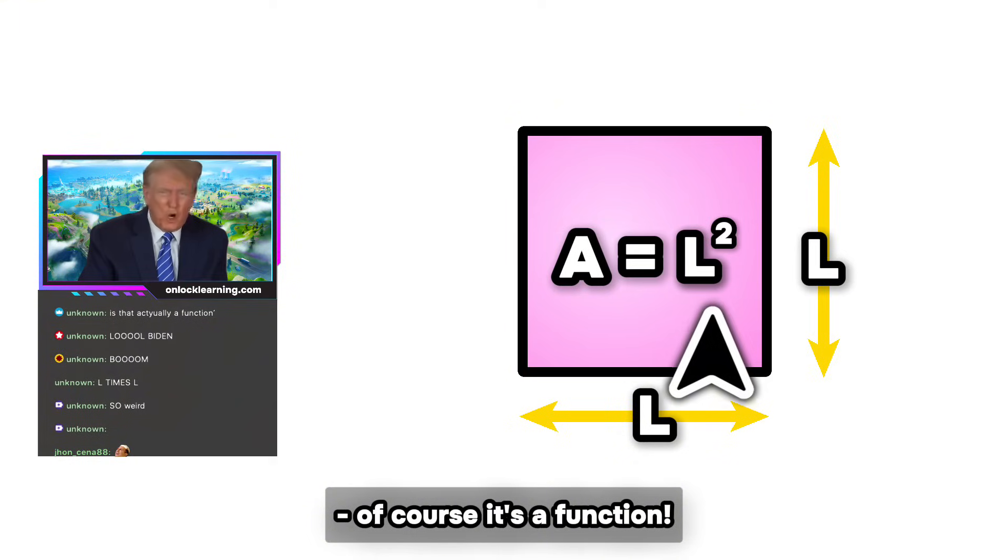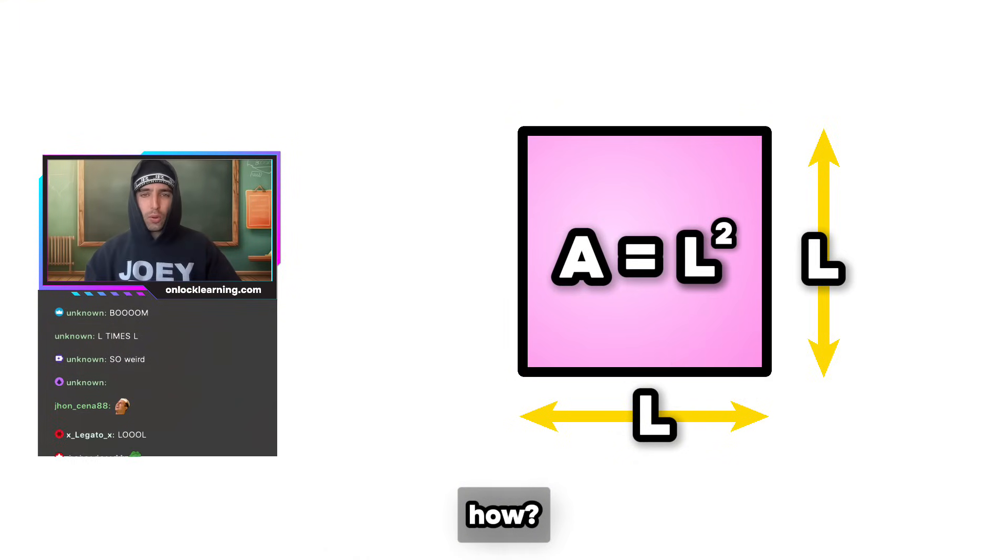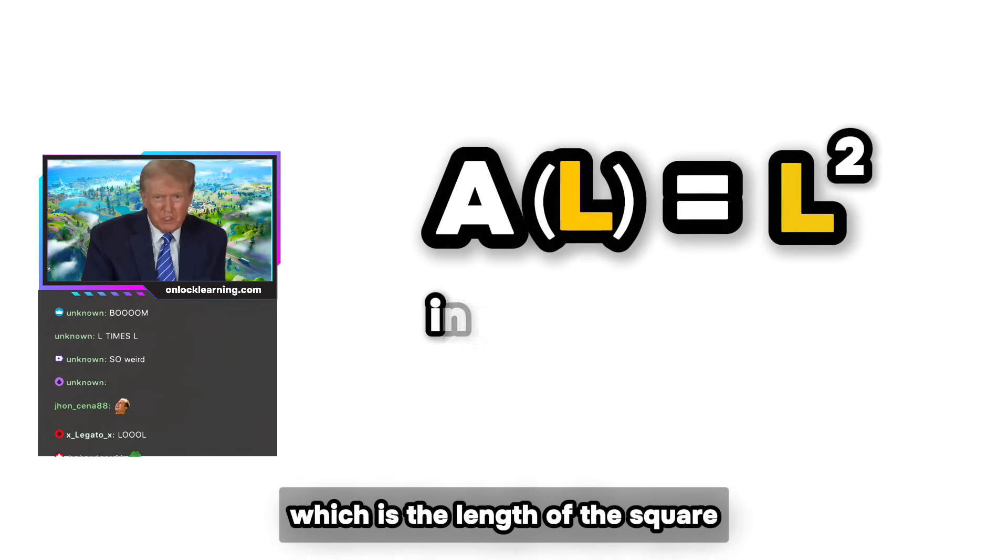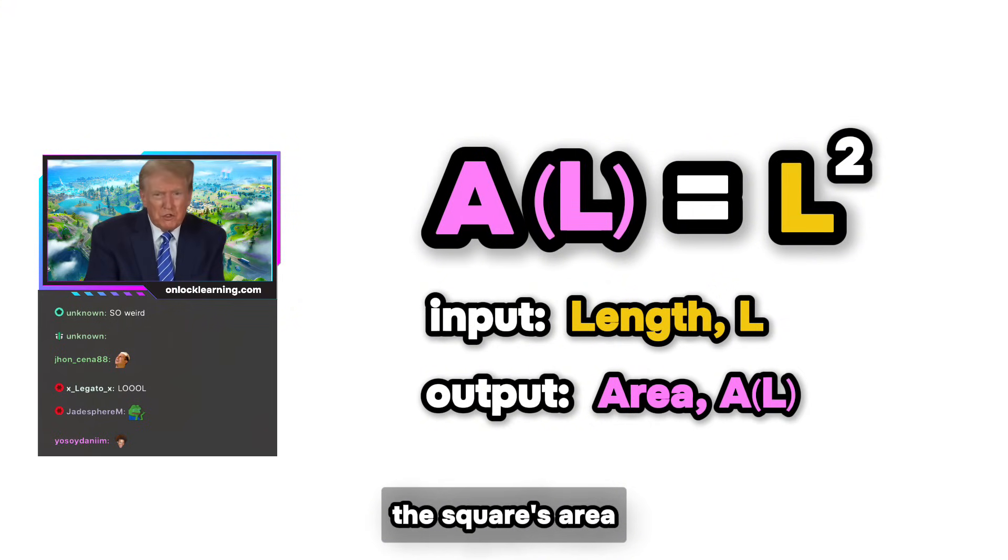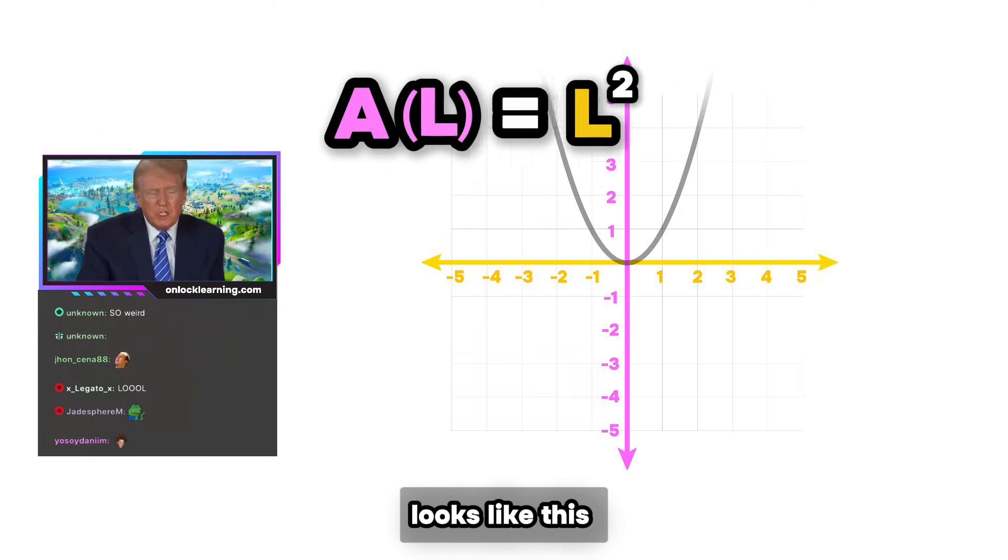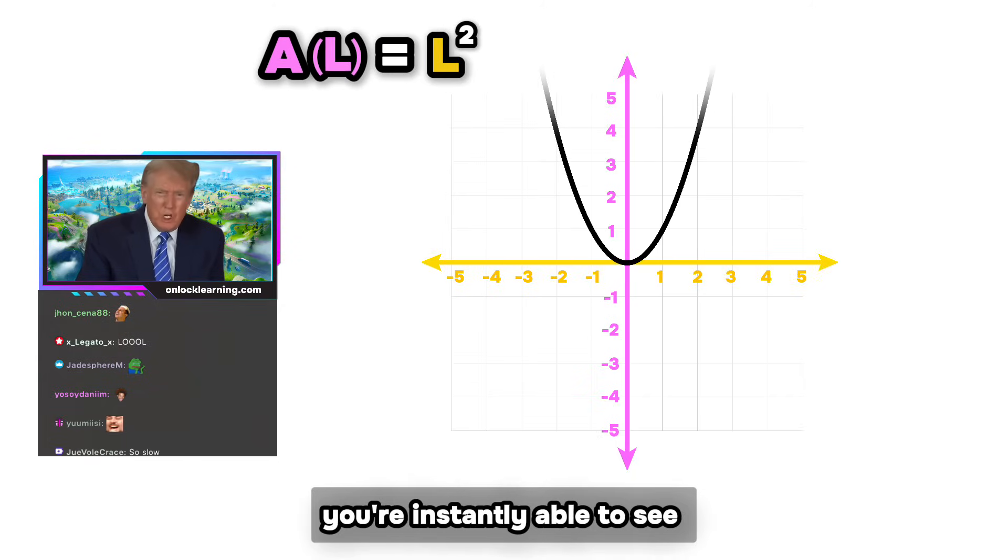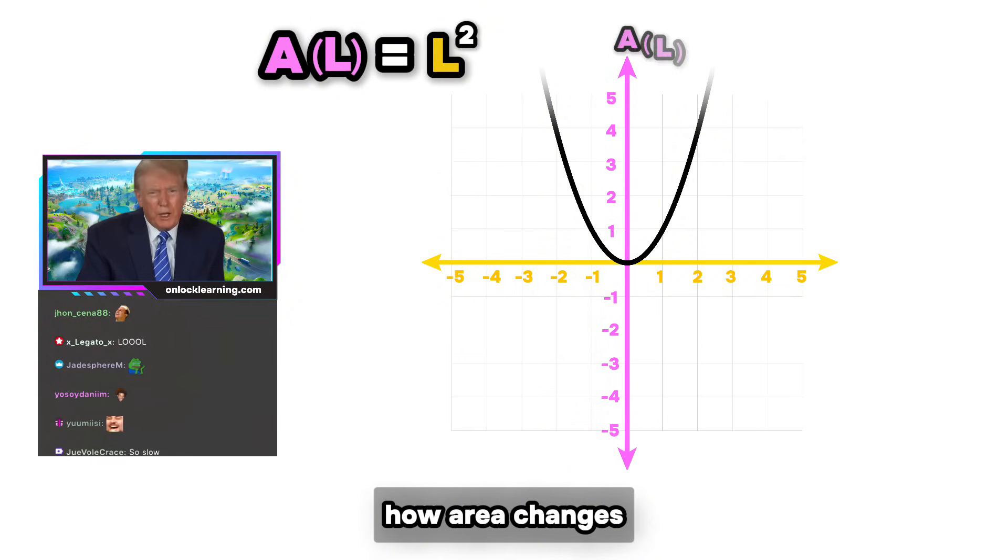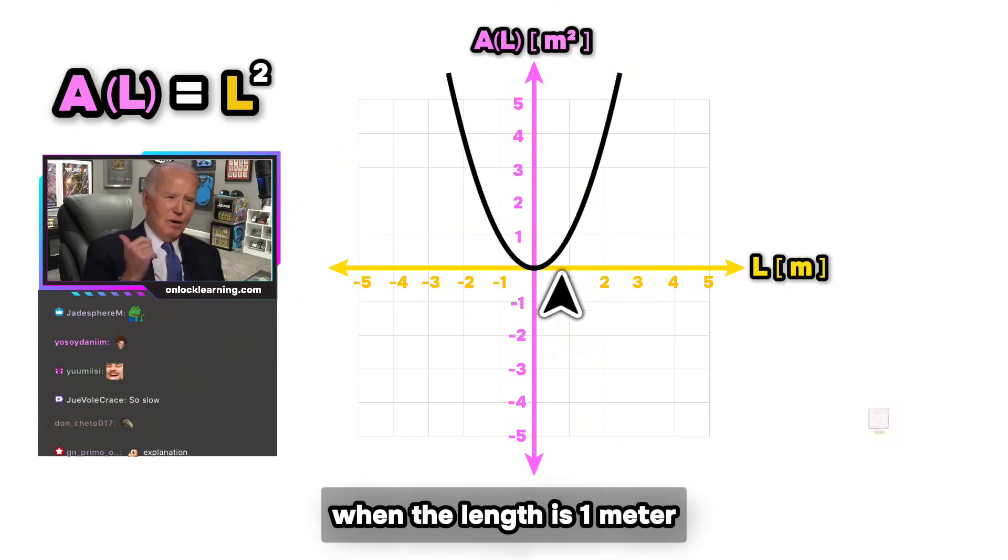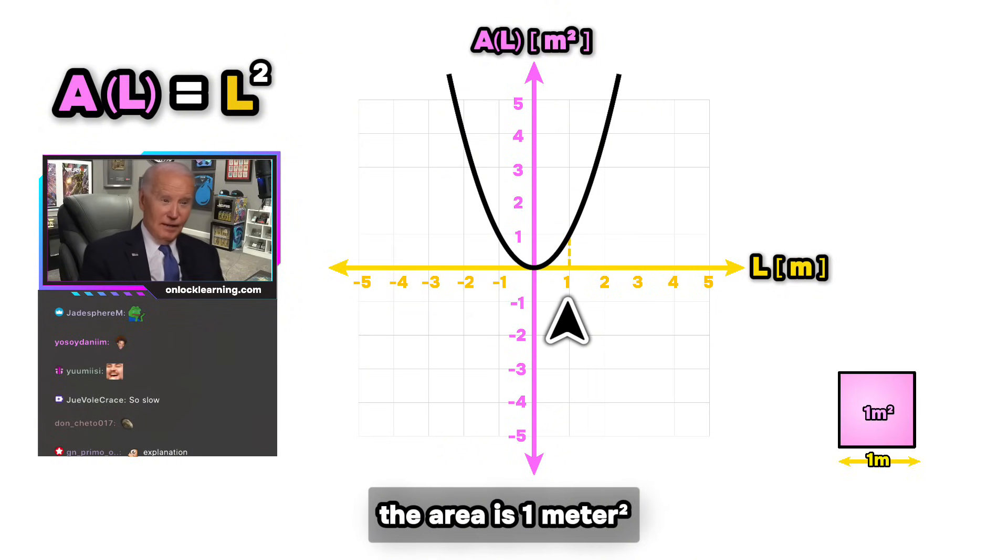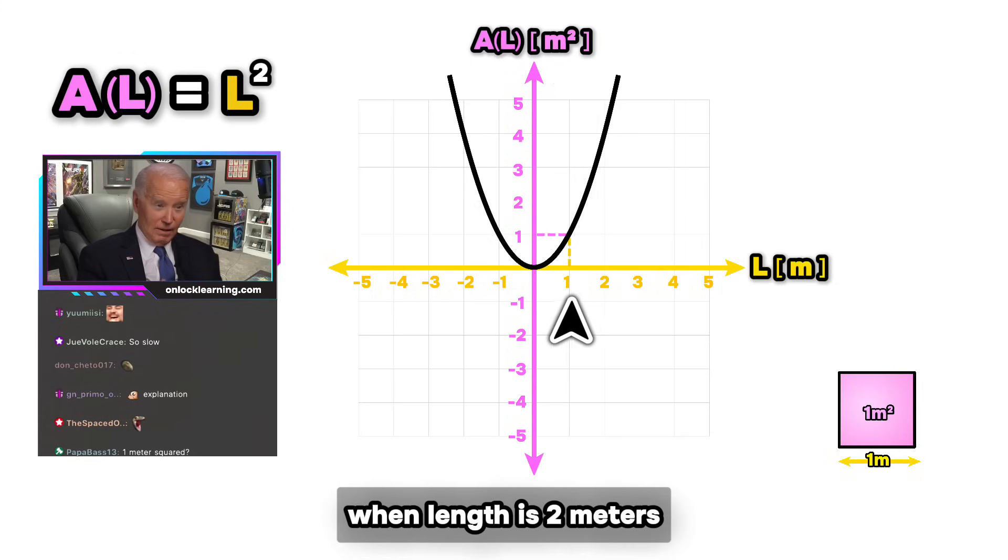Of course it's a function. How? Look at this. The input is L, which is the length of the square, and the output is A(L), the square's area, right. So this function on a graph looks like this. And with this, you're instantly able to see how area changes as length does. So say we're measuring this in meters, guys. When the length is one meter, the area is one meter squared. When length is two meters, the area is four meters squared, and so on.